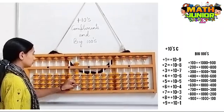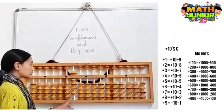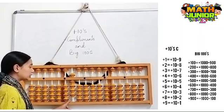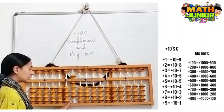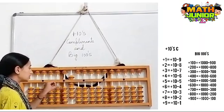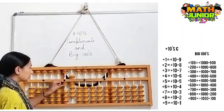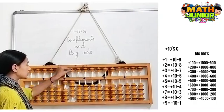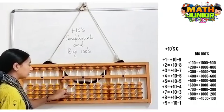Next, in the 100's lot, I have 900 and I need to add 300. So the formula for plus 300 is plus 1000 minus 700.